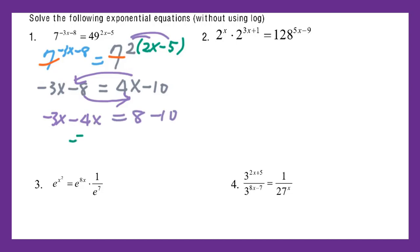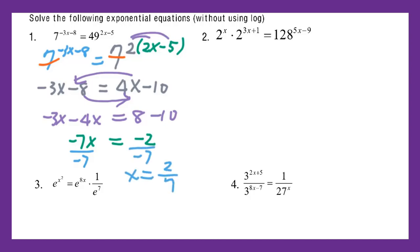Combine like terms: negative 7x equals negative 2. So you divide both sides by negative 7. I get x equal to 2 over 7. That's the final answer.